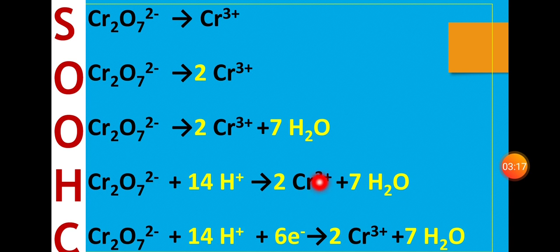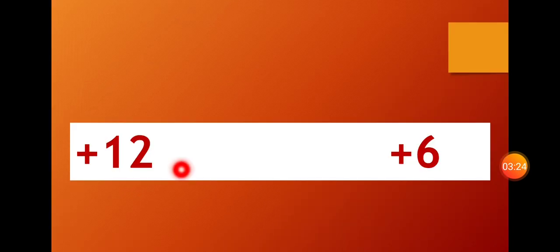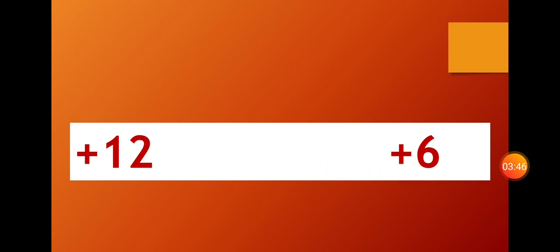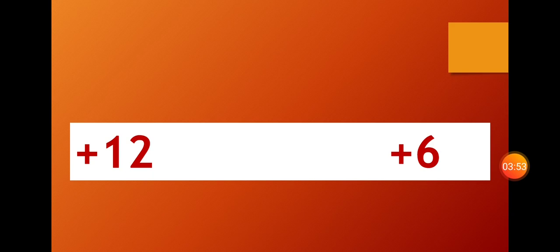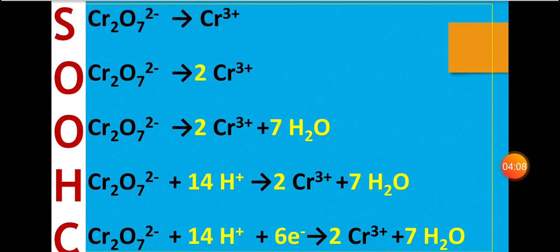Now let's check the charge. Left charge: 14 into +1, plus 14, minus 2 equals +12. Right charge: 2 into +3 equals +6. The difference is 6, so we add 6 electrons to the left side. 12 minus 6 equals +6, and the right side is already +6. So charges are balanced.